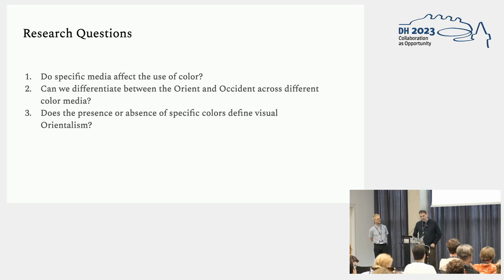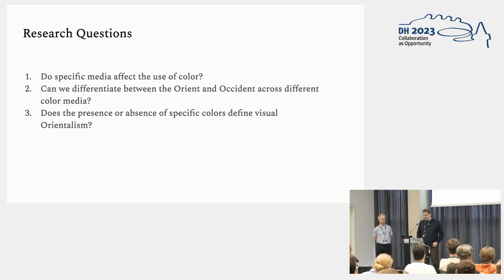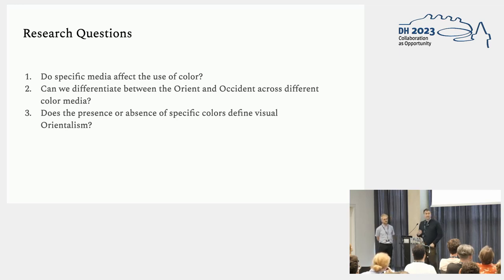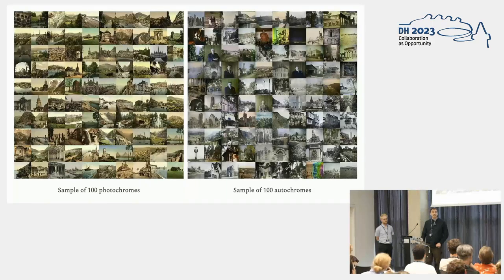We now come to our actual research. We have three research questions: Do specific media affect the use of color? Can we differentiate between the Orient and the Occident across different color media? And does the presence or absence of specific colors define visual Orientalism? We want to approach these questions computationally, using two datasets of different media.